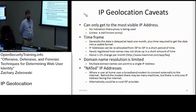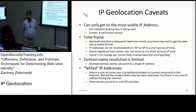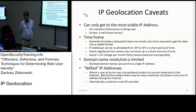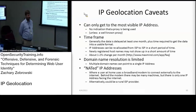Here are the huge caveats with IP geolocation. You can only get to the most visible IP address. Time frame is a huge issue — data is delayed at least one month plus time to generate the database. So there's always going to be some lag time inherent with any IP geolocation solution. There is also a 1% to 2% change per month, so given the large number of IP addresses on the internet, they are changing slowly over time.